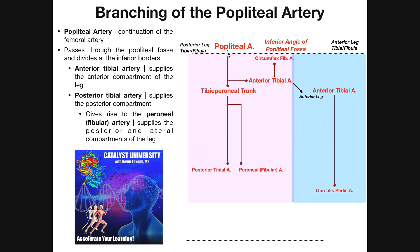When the popliteal artery enters the posterior leg, it quickly gives off the anterior tibial artery as a branch. When it gives off this branch, it changes names to the tibial peroneal trunk. The tibial peroneal trunk is very short-lived — it's a short artery — because it's very quickly going to bifurcate into two arteries: one is the posterior tibial artery, and the other is the peroneal artery or fibular artery. Recall that peroneal and fibular mean exactly the same thing.